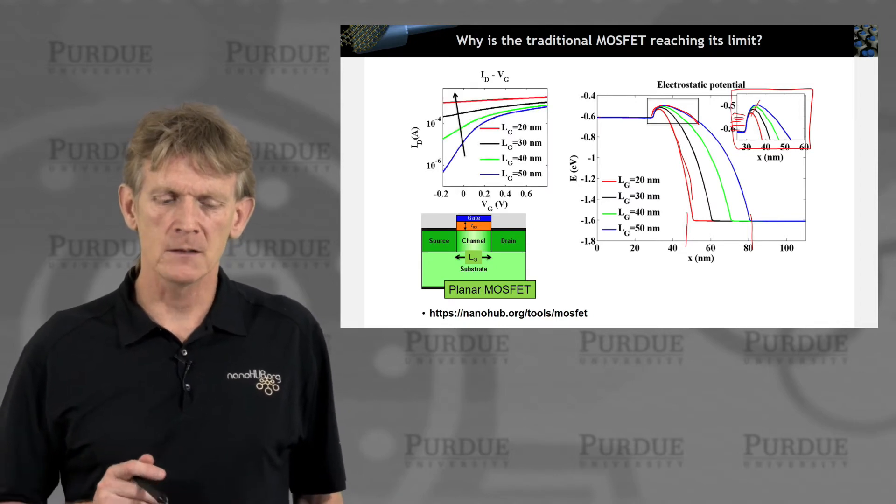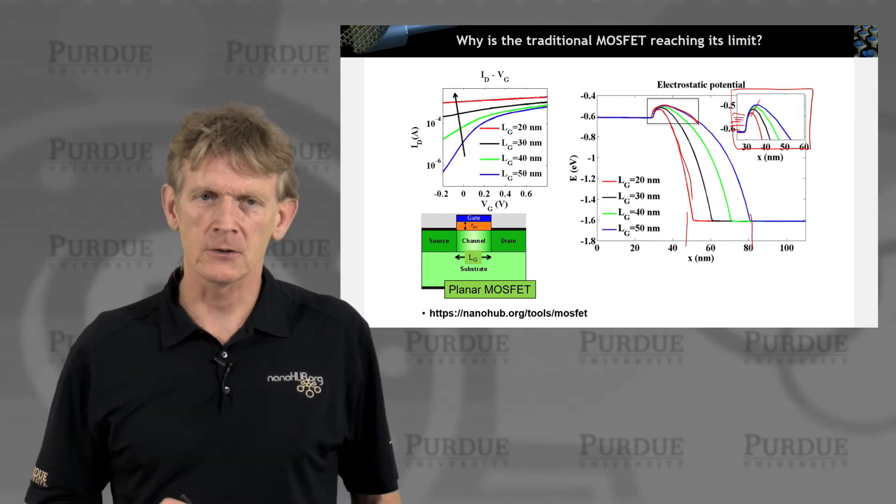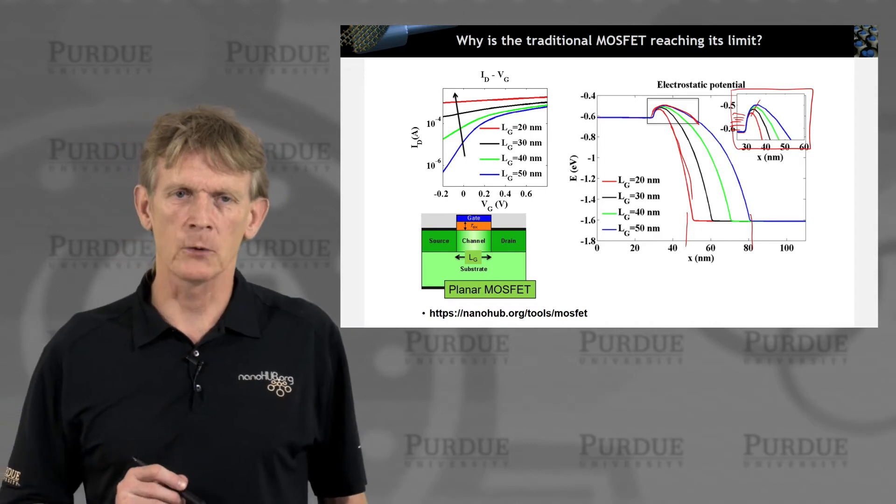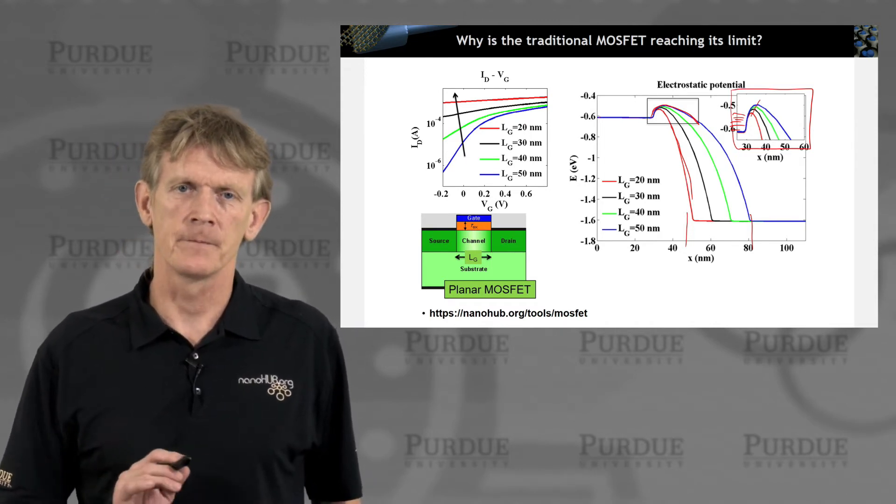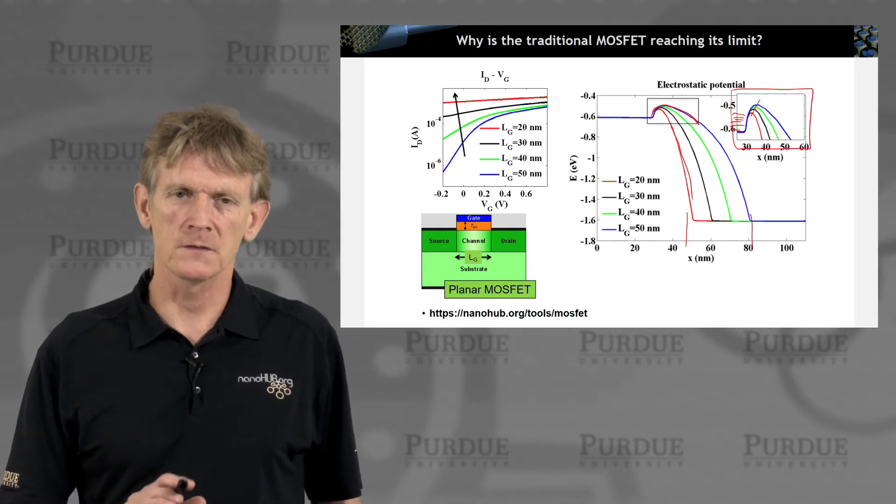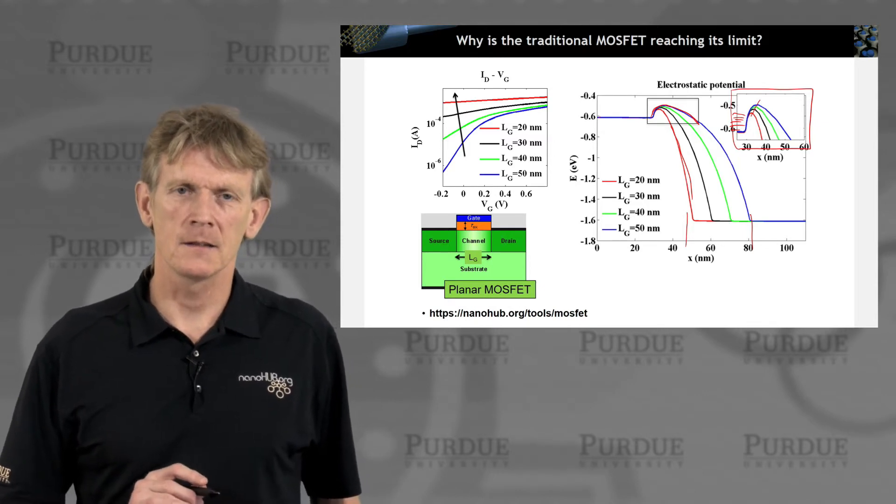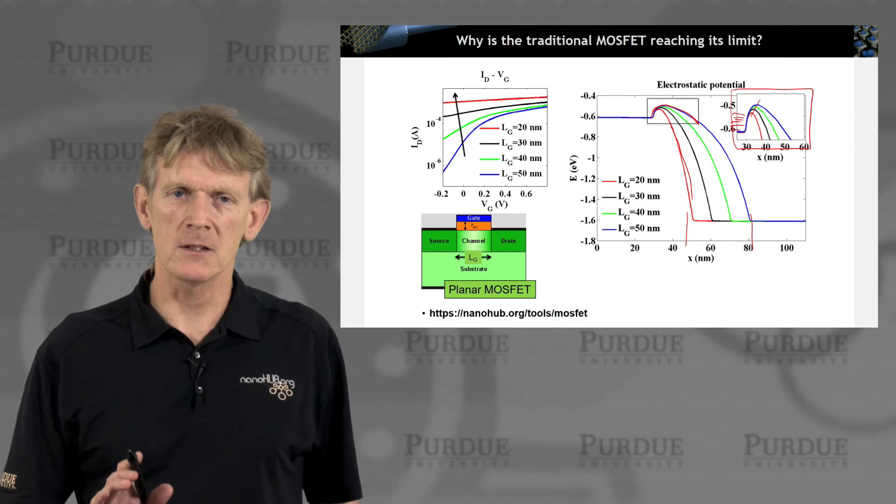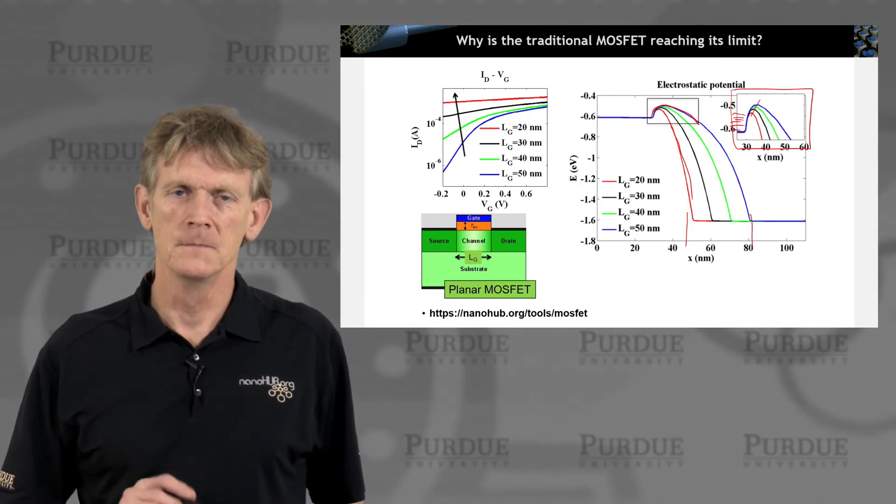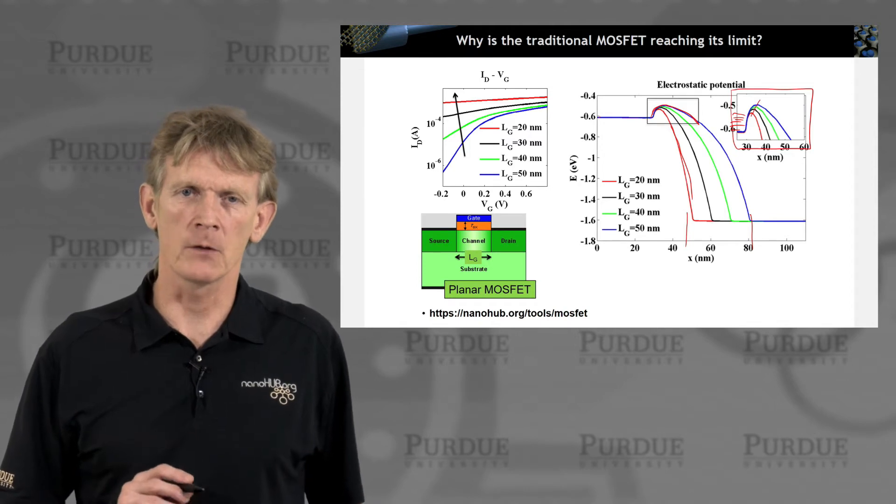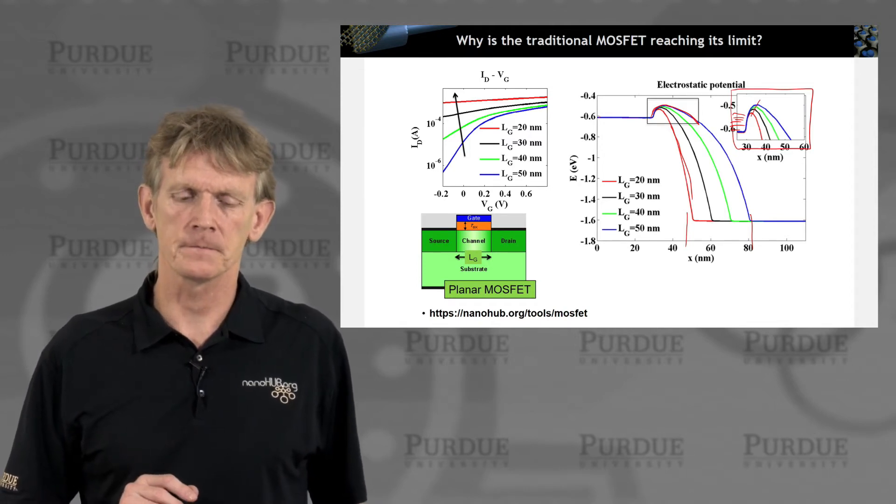In a simple calculation, a semi-classical transport simulation will give you this. This tool is not wrong. It works very well, and given these approximations of drift diffusion, it will show that this transistor will not work very well at all anymore.